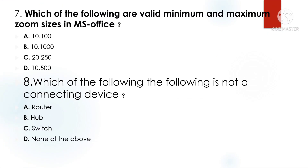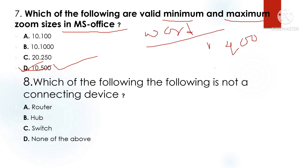Question 7: Which of the following are the valid minimum and maximum zoom size in Microsoft Office? Option D: 10 to 500. The valid zoom range in Microsoft Office is 10% to 500%.